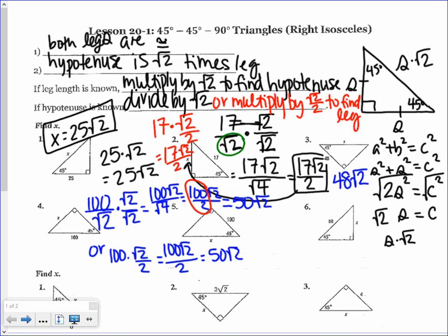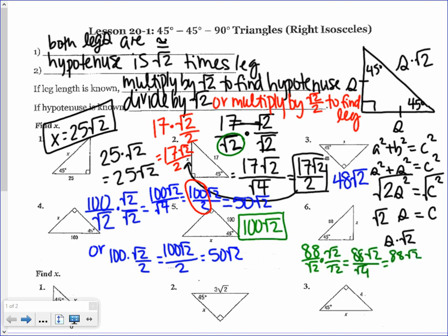For number 5, they give us a leg of 100, so to find the hypotenuse we multiply by √2 to get 100√2. For number 6, the hypotenuse is 88. Dividing by √2 and rationalizing gives 88√2 over 2, which reduces to 44√2. Multiplying by √2 over 2 gives the same: 88√2 over 2 equals 44√2.